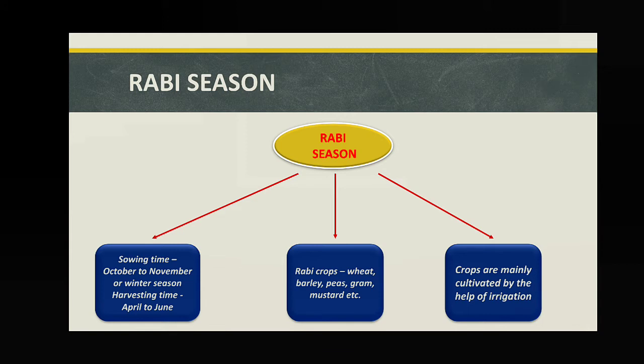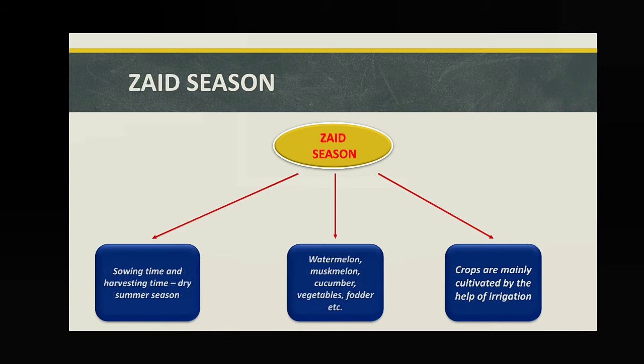Rabi crops are mainly cultivated using irrigation because in India this season has very little rainfall. Only Tamil Nadu experiences a rainy season in winter; except for Tamil Nadu, no other state has winter rainfall. That is why we depend on irrigation facilities during the Rabi season.